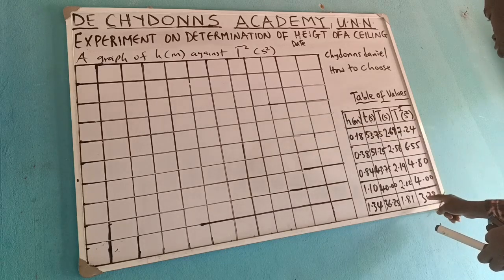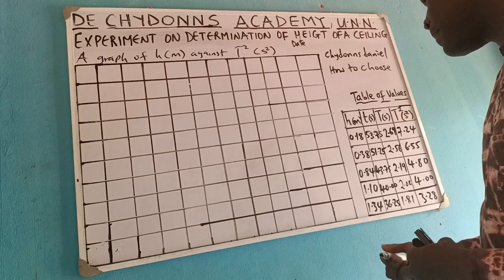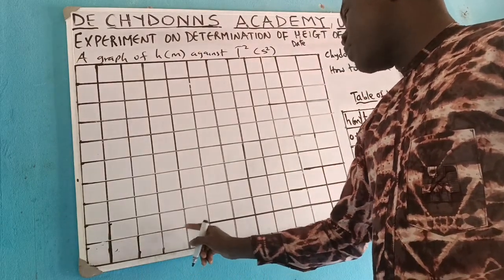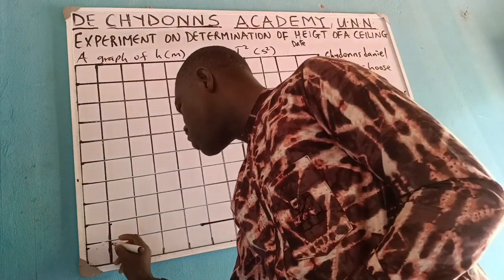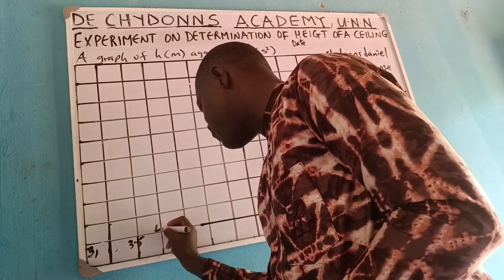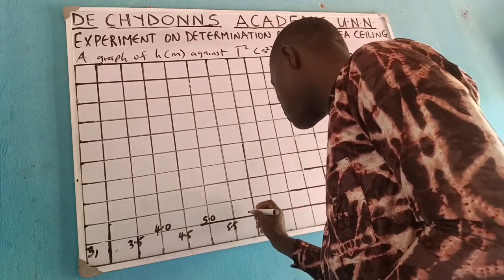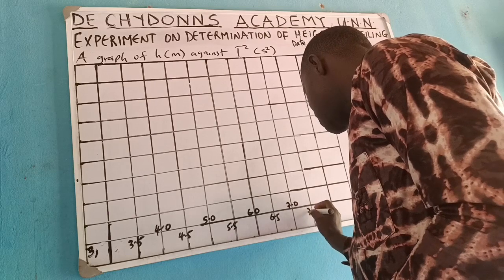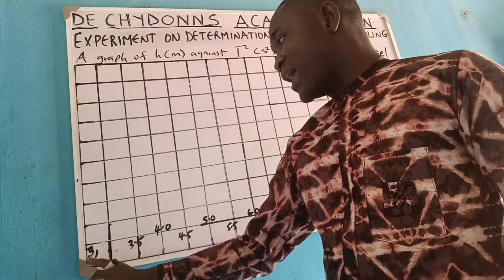For the horizontal axis (T squared), the highest is 7.5 and the lowest is about 3. The axis goes: 3.0, 3.5, 4.0, 4.5, 5.0, 5.5, 6.0, 6.5, 7.0, 7.5. Label the horizontal axis as T squared in seconds squared.